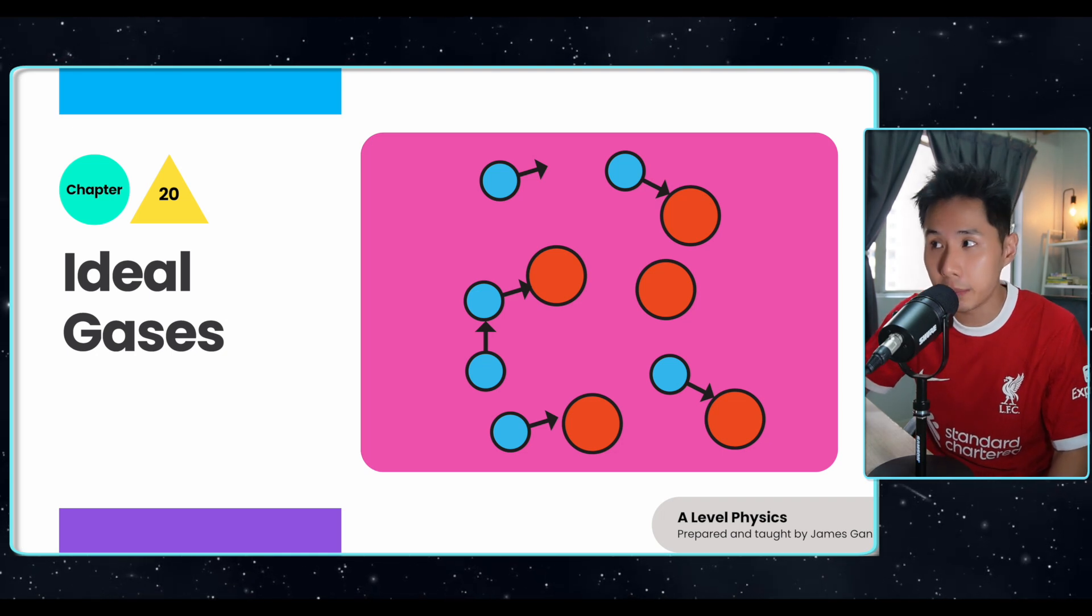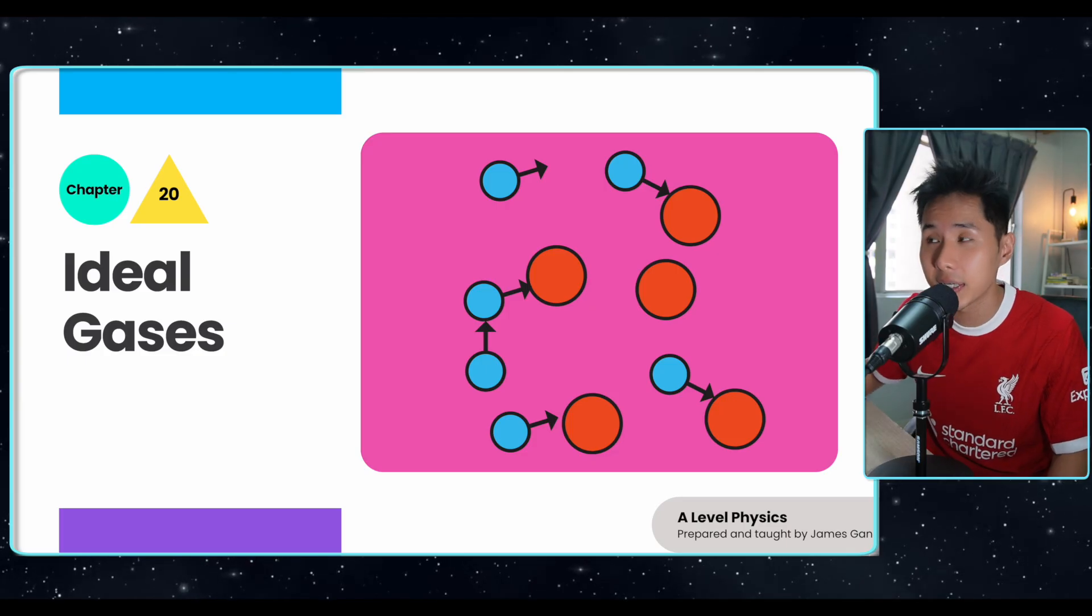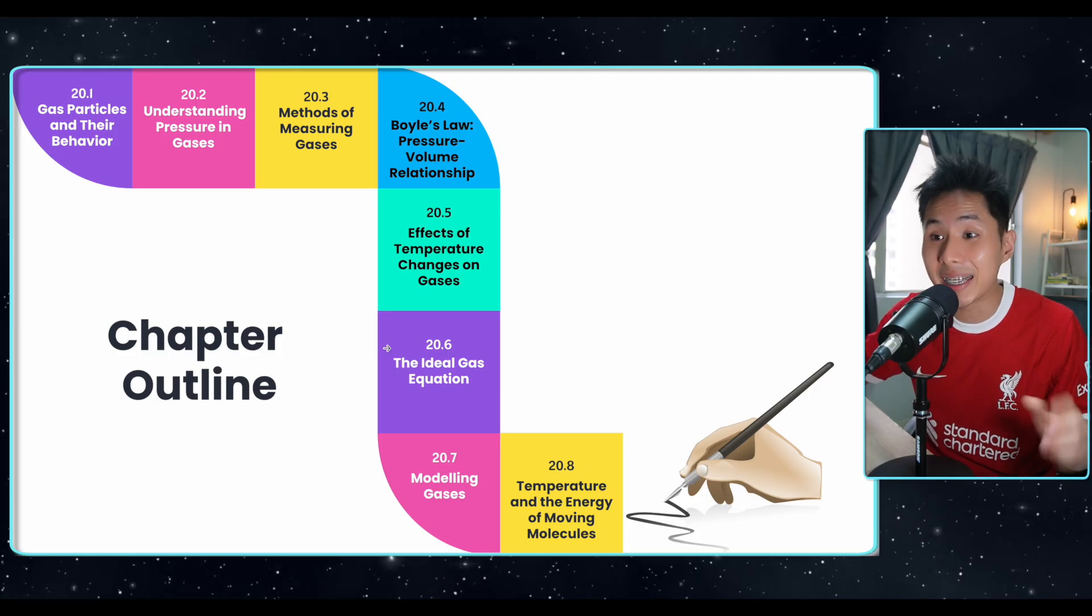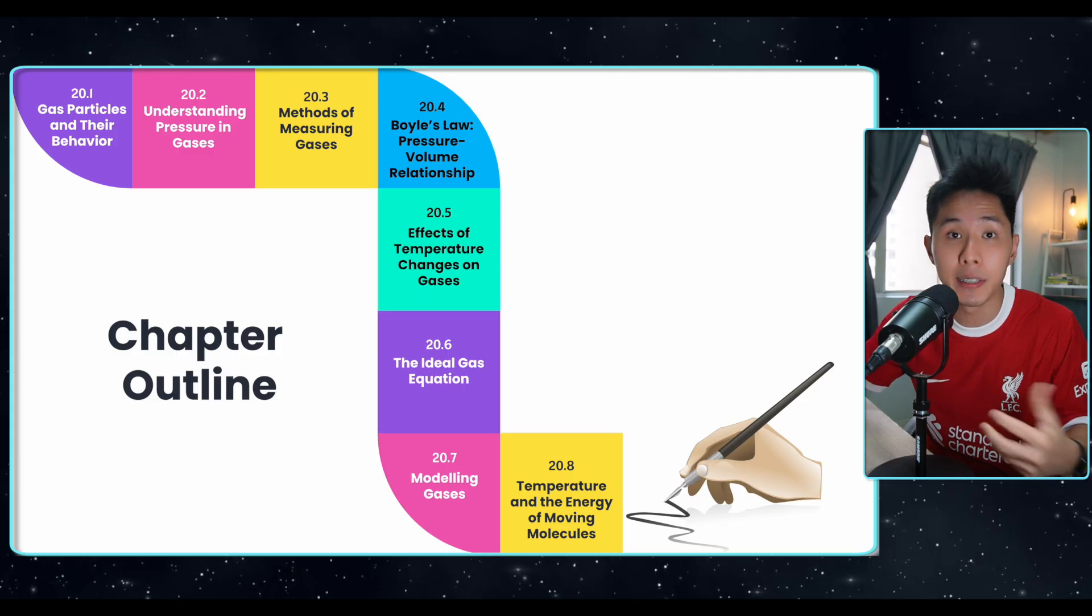Hello everyone, welcome back to this channel, this is James. Today we're going to talk about A-level physics chapter 20, ideal gases, and this is the chapter outline. The general big idea of the chapter is that we're going to study gas particles in depth and what are the factors that affect their physical properties.